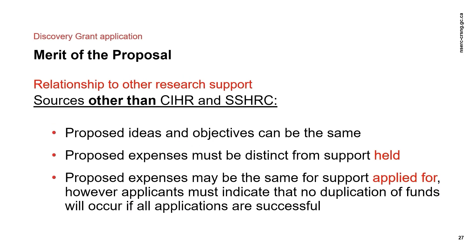Applicants to the Discovery Grant Program can receive research support from sources other than CIHR and SHRC for the same research ideas and objectives, as long as it is used to cover different expenses. For funding that has been applied for, you must indicate that there will be no duplication for the same expenses, and also indicate that no duplication of funds would occur if all applications are successful. Other sources of research support include grants and contributions from federal and provincial funding agencies, non-governmental organizations, the private sector, universities, institution startup funds, the primary place of employment for adjunct professors employed outside of academia, and others.